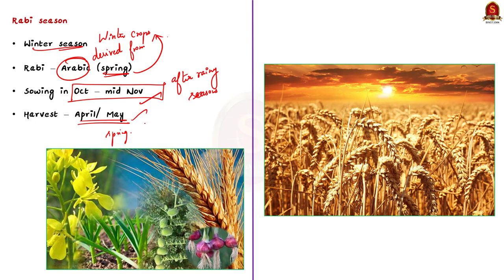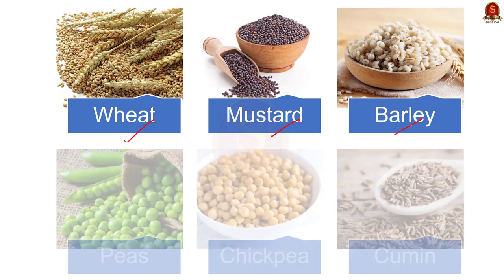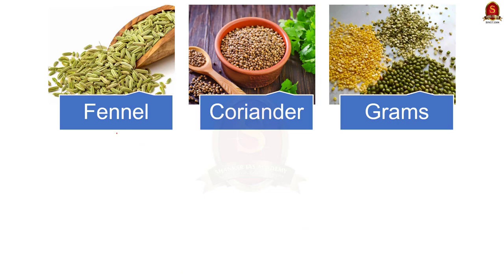Let us see some examples of Rabi crops. Rabi crops include wheat, mustard, barley, peas, chickpea, cumin, fennel, coriander and types of gram.